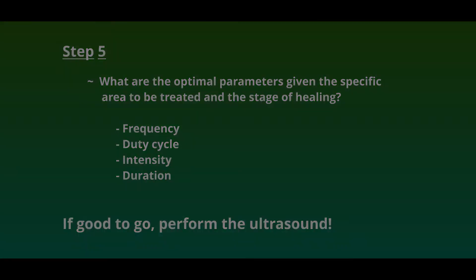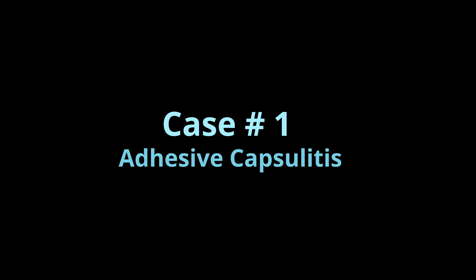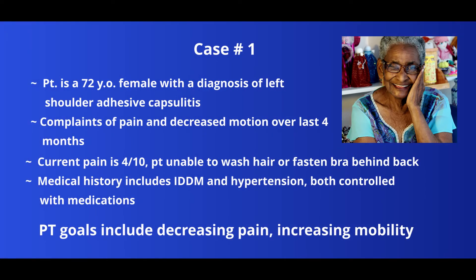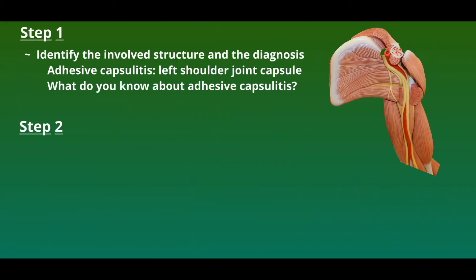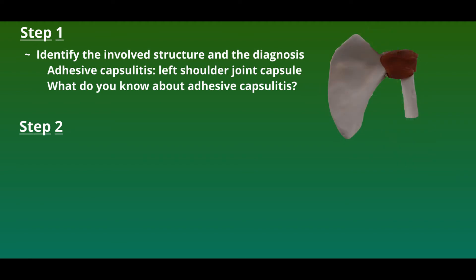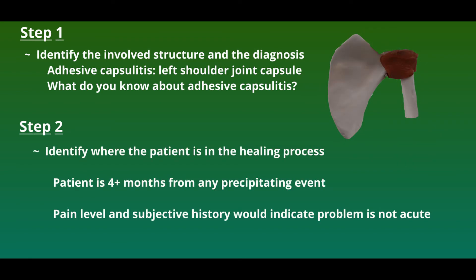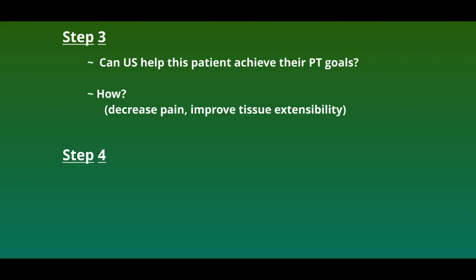So let's see how the process works for a few case studies. Case number one involves a 72-year-old female patient with left shoulder adhesive capsulitis. Symptoms have slowly increased over the past four months, and she presents with pain and lost motion. Her medical history is significant for insulin-dependent diabetes mellitus and high blood pressure. Our goal is to decrease pain and improve mobility. Adhesive capsulitis is a slow-developing inflammatory condition of the shoulder joint capsule that leads to restricted mobility. The pain and stiffness progressing over a four-month period, combined with a pain level of four out of ten, would indicate this patient is not in an acute inflammatory state.